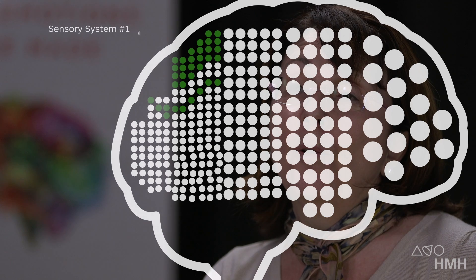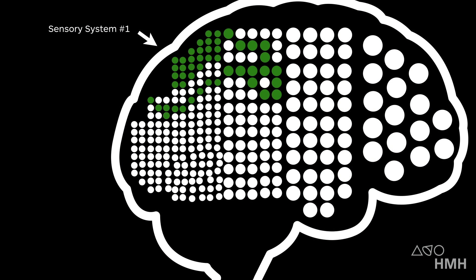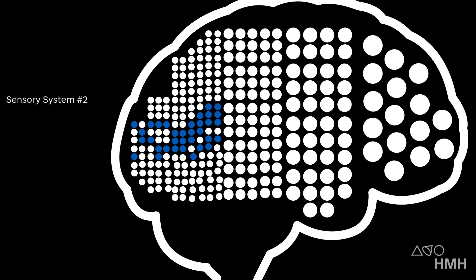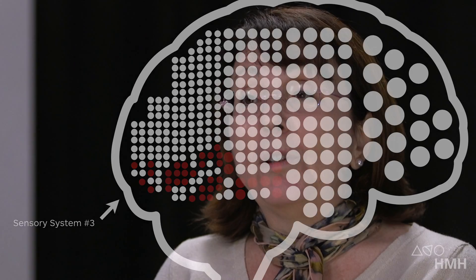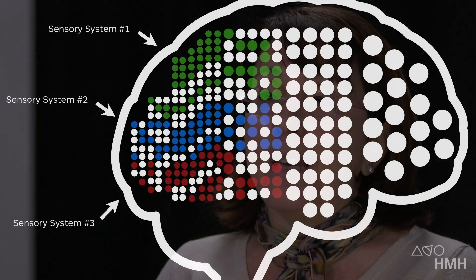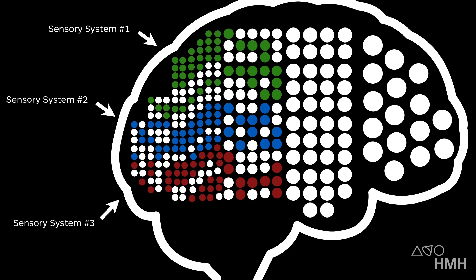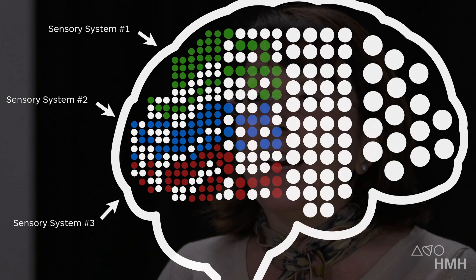Imagine a bunch of neurons firing in some pattern. Now along comes a smaller group of neurons that are a little better connected to one another, and they say we can represent this pattern a little more efficiently — and so they do. Let's imagine this happens for every sense that you have: seeing, hearing, touching, and so on. In this example I've only depicted three different senses; this sort of thing happens all the time in your brain.